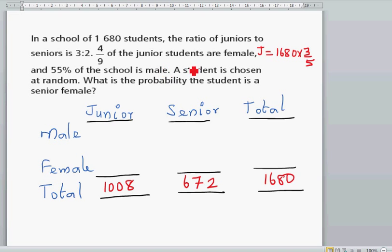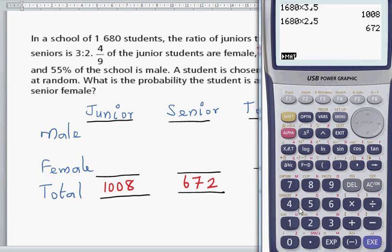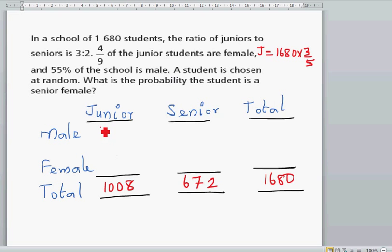Four-ninths of the juniors are female. So 4/9 of the juniors. What is juniors? How many are juniors? 1,008. So 1,008 times 4/9. Four-ninths is going to be 448. So you have 448 juniors.